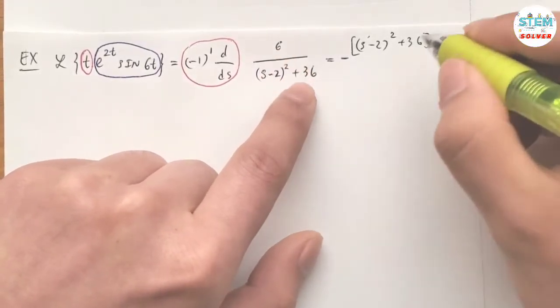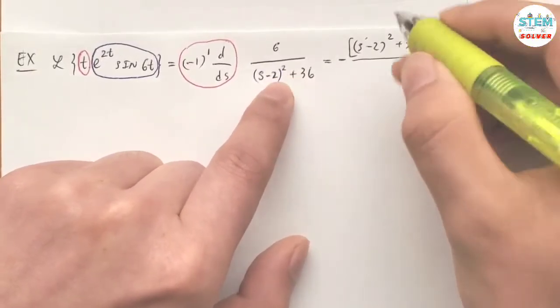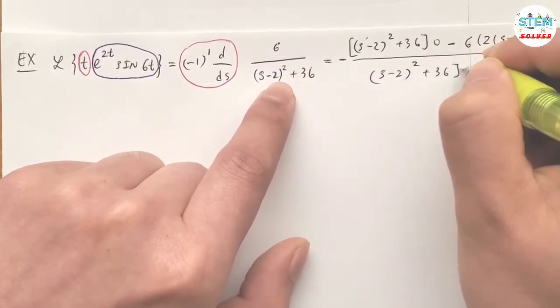And the derivative of this again, 0, over the bottom squared. s minus 2 squared, plus 36, squared.